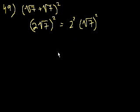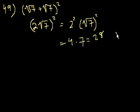That's just your exponent properties. So that is equal to 4 times, what's the square root of 7 squared? Well, it's just 7. So it's 4 times 7, which is equal to 28, which is choice C.